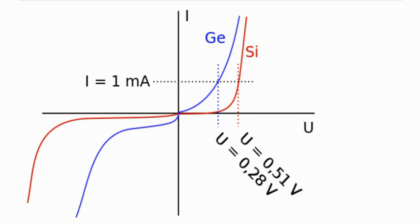As you can see, U is the voltage and I is the current. I takes the y-axis and U takes the x-axis. When you forward bias a p-n junction diode, you apply the positive terminal to the p-type material and the negative terminal to the n-type material.